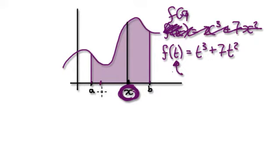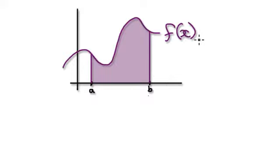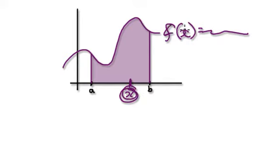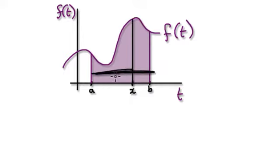Suppose this number here is, say, 3. We can still put it into the function — put it into the t here — and this whole thing will allow us to jump to the height here. Normally we'd call this f of x equals something, but because we want to reserve x to mean something else, we have to call it f of t. So this is a graph of t versus f of t. This x here can slide back and forth; it could be anywhere.